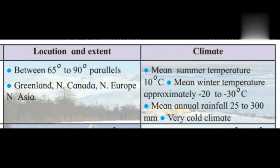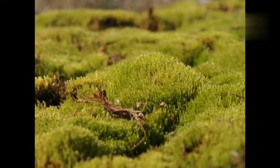The countries are mainland North Canada, North Europe, and North Asia. The climate has a mean summer temperature of 10 degree Celsius, and in winter the temperature is minus 22 to minus 30 degree Celsius. Rainfall is 25 to 30 millimeter — a very cold climate.